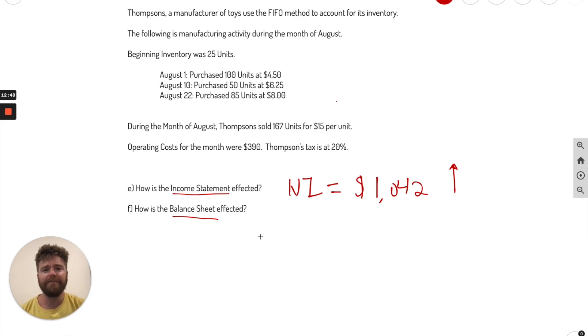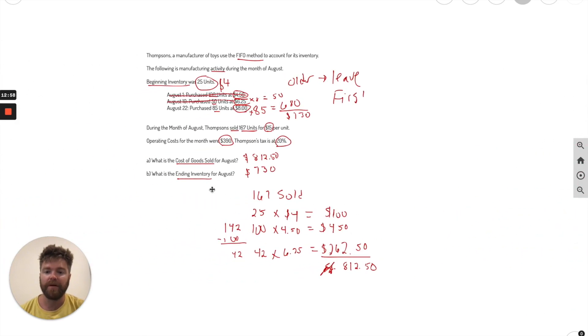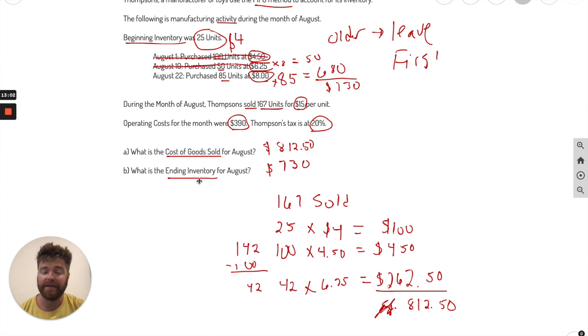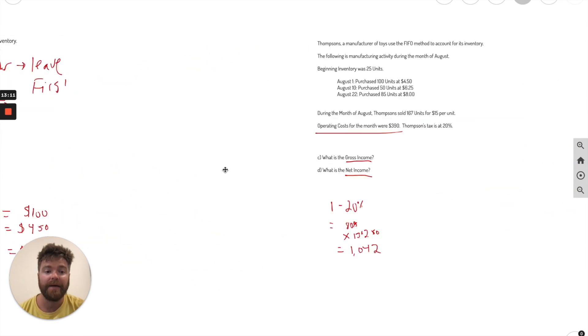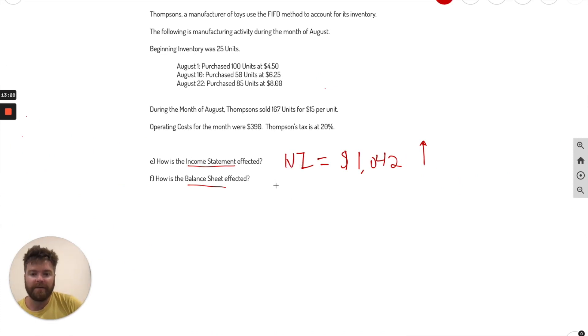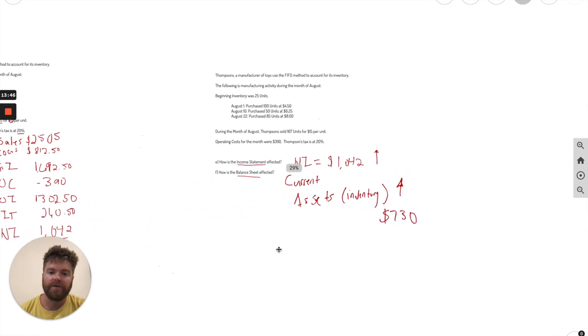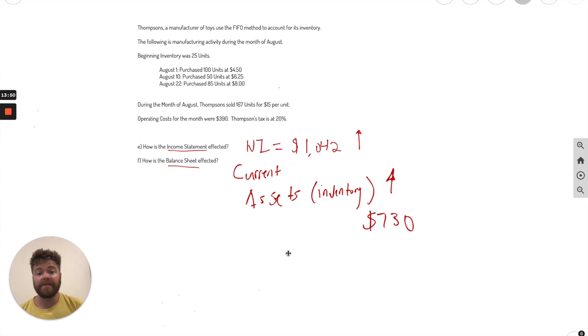Last question is, how is the balance sheet affected? Well, what we do there, we go back over all the way back to the original problem. If you remember, we had ending inventory. Inventory is an asset that goes on your balance sheet. So, what happened? Well, inventory went up by $730. So if we go back all the way over here, we know that our current assets, because inventory is a current asset, current assets, or you can say inventory, it went up by $730. I'm just going to double check to make sure that's right. Yep, $730. Good to go.